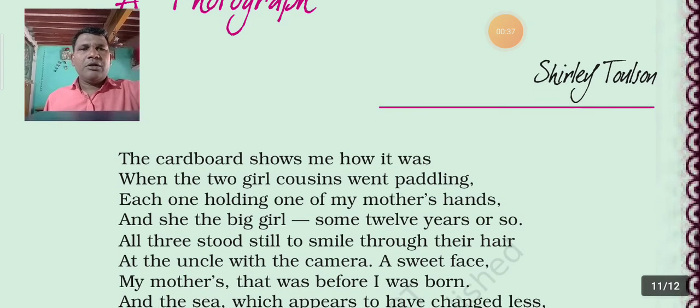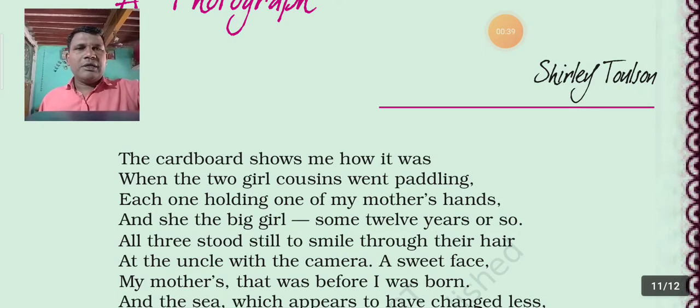When the two girls' cousins went paddling — in this line, the W letter and sound is repeated, so alliteration is used.